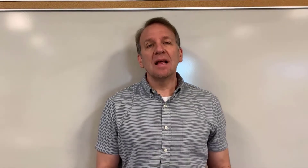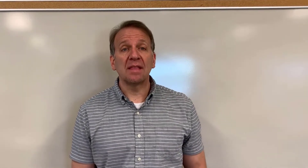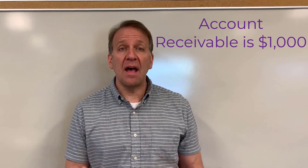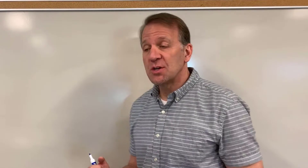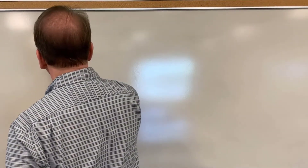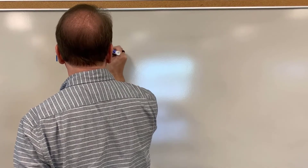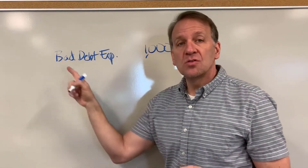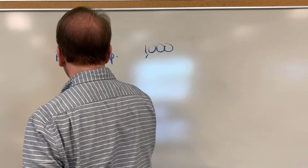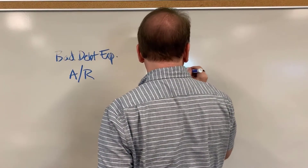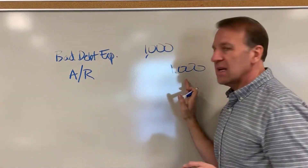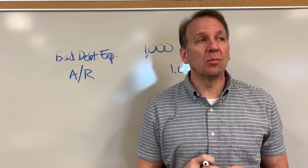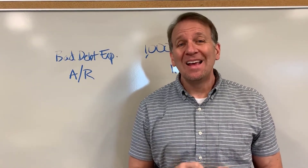Let's say that we have an account receivable from a current customer and they owe us a thousand dollars. If they owe us a thousand dollars and we find out that they're not going to pay us through all of our efforts, then we need to write this expense off. The journal entry would be to debit bad debt expense — this is a new account — for $1,000, and then we're going to credit accounts receivable for that customer $1,000. That's the journal entry to write off this bad debt expense, this accounts receivable that isn't going to be collected.